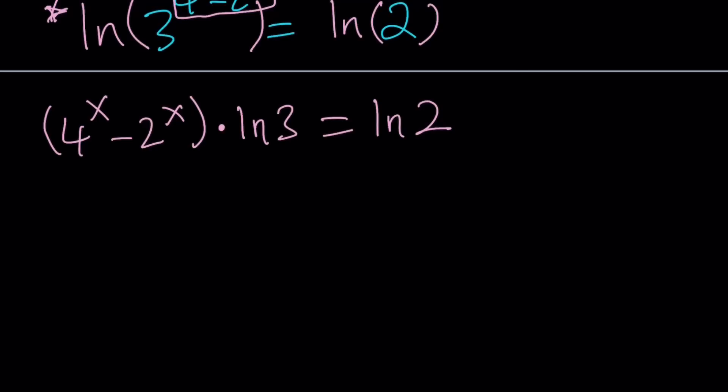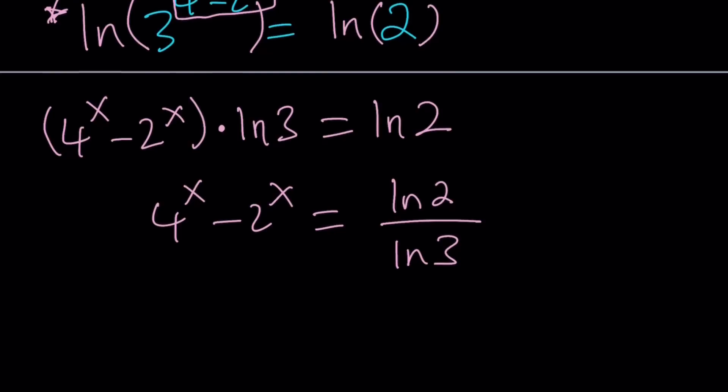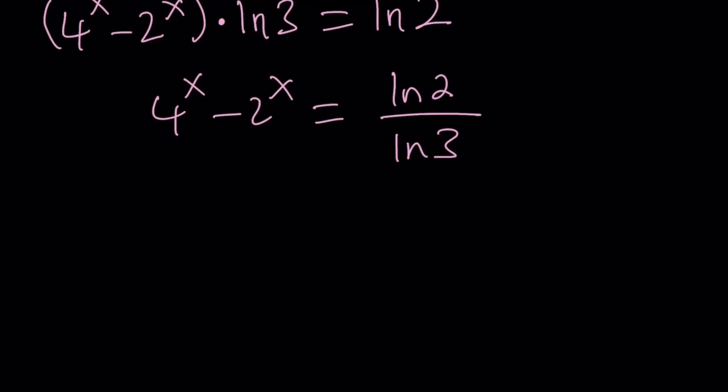So the next step would be whatever x terms you have try to isolate them. That's basically what we do for solving equations. Division by ln 3 so 4^x - 2^x = ln 2 / ln 3. And what does this tell you? If you said quadratic equations you're totally right about that.